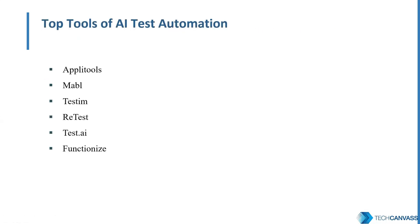Now let's look at the third-wave automation tools ready to revolutionize software testing. The first in the list is Applitools, which provides AI-powered visual testing. The next is Mabl, which makes use of ML for automation testing — it is easy to set up and provides auto-healing test scripts and ML-driven regression packs. Another tool is Testim, which leverages machine learning to speed up the execution and maintenance of test cases, focusing on removing test flakiness. Other tools in the list include vTest, Test.ai, Functionize, and many more.